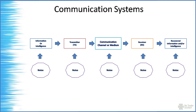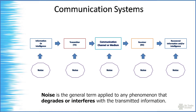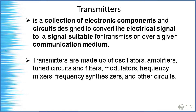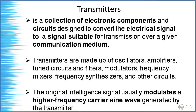Noise is the general term applied to any phenomenon that degrades or interferes with the transmitted information. A transmitter is a collection of electronic components and circuits designed to convert an electrical signal to a signal suitable for transmission over a given communication medium. Transmitters are made up of oscillators, amplifiers, tuned circuits, filters, modulators, frequency mixers, frequency synthesizers, and other circuits.